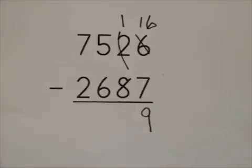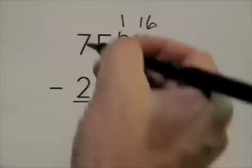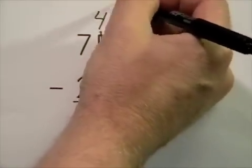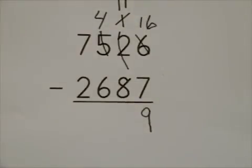We then move to the tens column. 8 is larger than 1, so we'll need to regroup. We'll make this a 4, regroup that, and make that an 11. 11 take away 8 is 3.